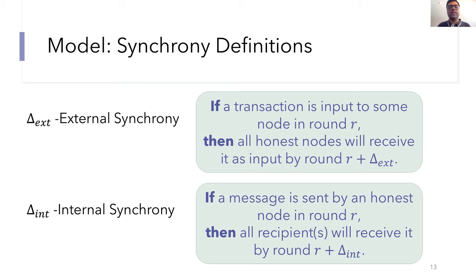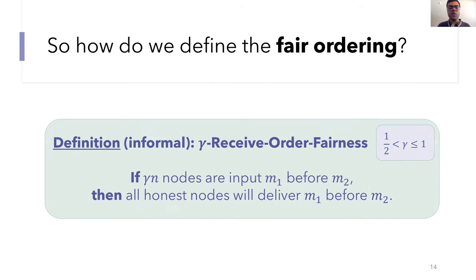So informally, this is the assumption that a client's connection to one node isn't much slower than its connection to other nodes. For the internal network, our synchrony assumption is the same as prior work. Formally, the internal network is said to be delta synchronous if when an honest node sends a message in round r, all of the intended recipients should have received it in round r plus delta.